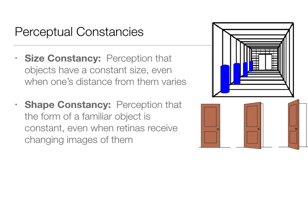Shape constancy: when you look at a closed door straight on, it gives a rectangular image on your retina, but as you open the door, the shape changes across your retina. You don't perceive this change because you have shape constancy — especially for familiar objects. The Ames Illusion video from the first lecture played on size and shape constancy, making a woman look shorter on one side of the room because of top-down processing.